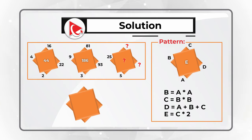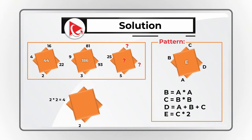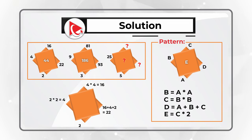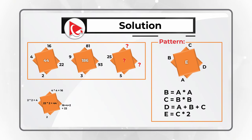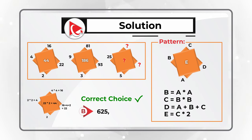Looking at the first diamond: the number at the bottom is 2. The number on the left is 2 × 2 = 4. The number on the upper side is 4 × 4 = 16. The number on the right is 16 + 4 + 2 = 22. The number in the middle is 22 × 2 = 44. Following this logic, you get choice B: 625, 655, and 1310.